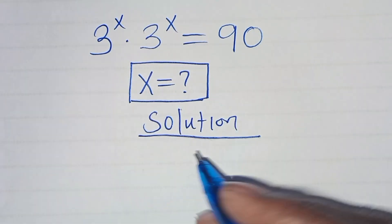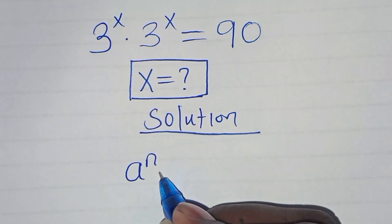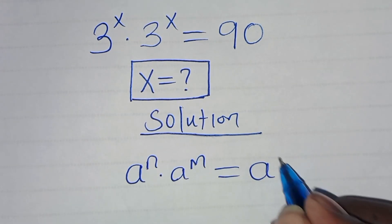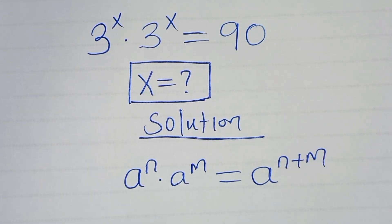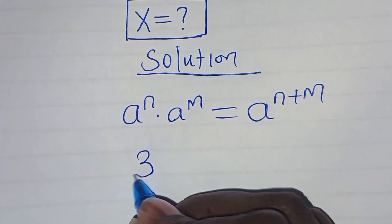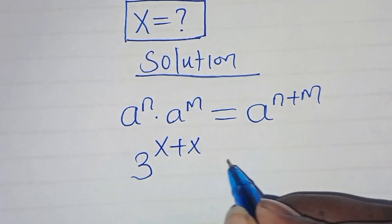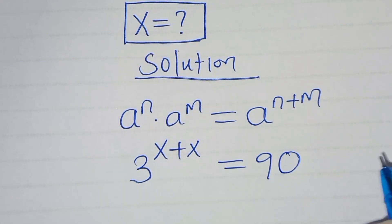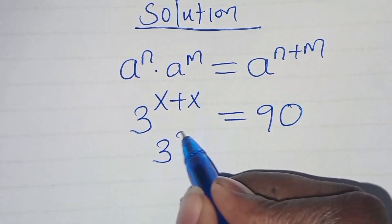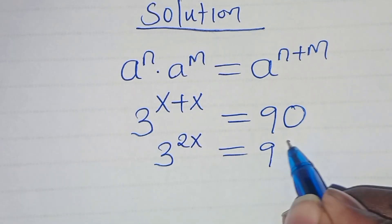This exponential equation is in the form of a to the power of n times a to the power of m, which we can express as a to the power of n plus m. So this implies that here we have 3 raised to the power of x plus x, which is 2x. This is equal to 90.